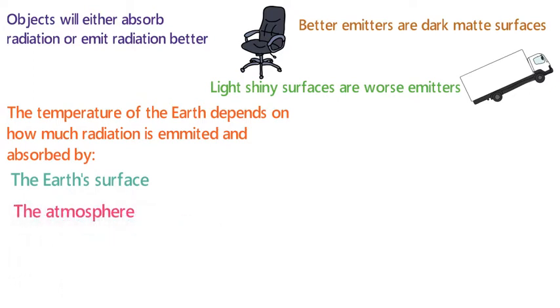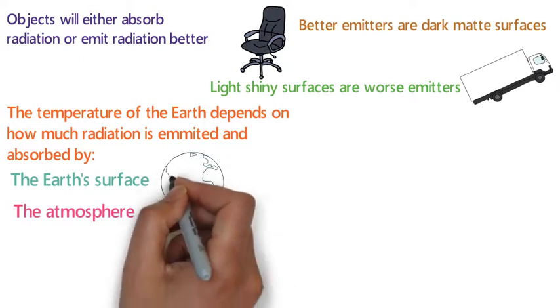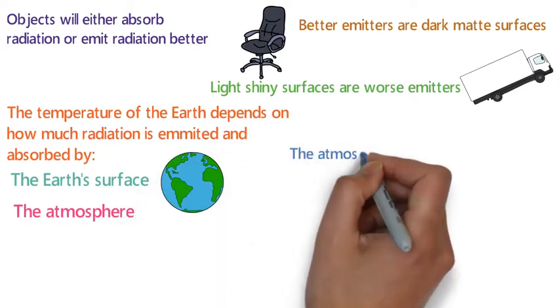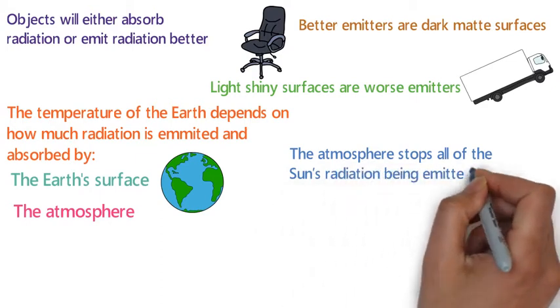Without our atmosphere, all of the sun's radiation would be emitted into space and the earth's surface would not receive any radiation. This means the temperatures would drop very low.